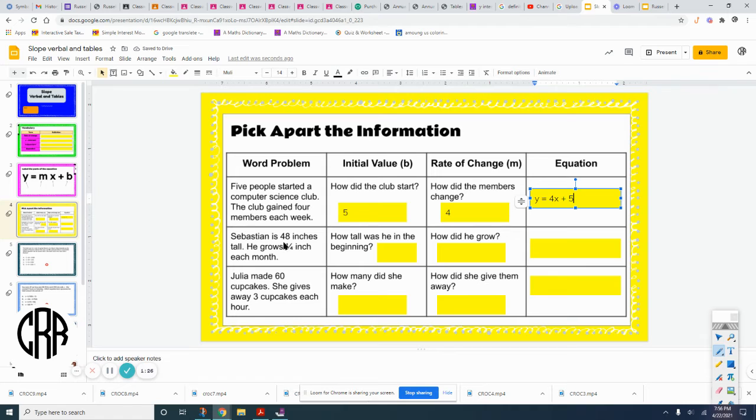So look at this one. Sebastian is 48 inches tall, he grows a quarter of an inch each month. So how tall is Sebastian in the beginning? 48 inches. That is our initial value that goes at the end of the equation.